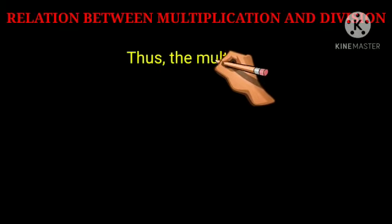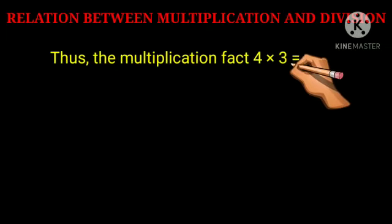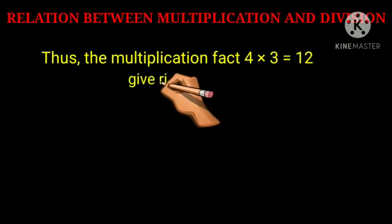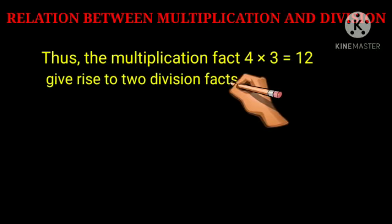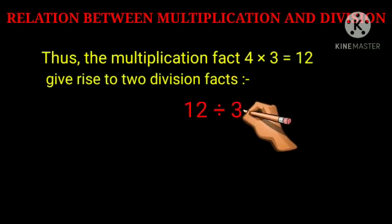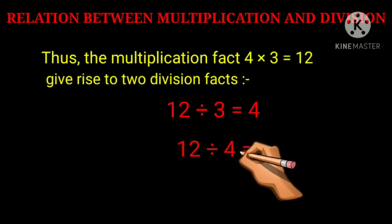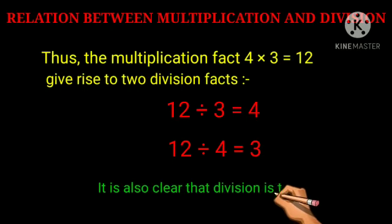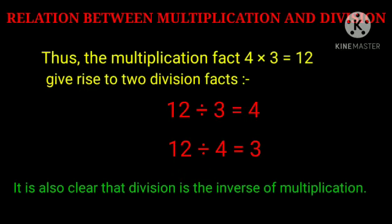Thus the multiplication fact 4 into 3 equals 12 gives us two division facts: 12 divided by 3 equals 4, and 12 divided by 4 equals 3. It is also clear that division is the inverse of multiplication.